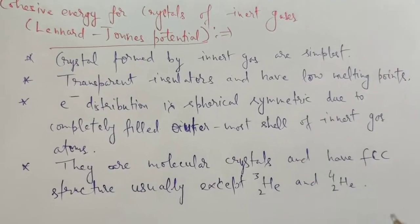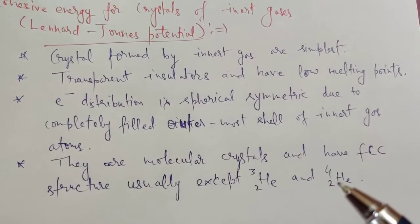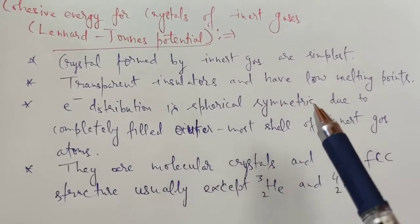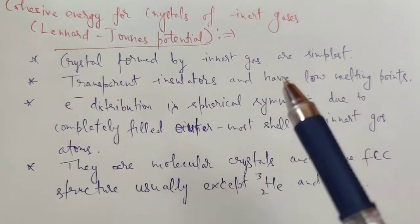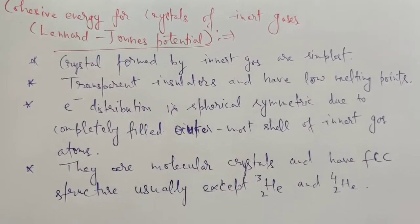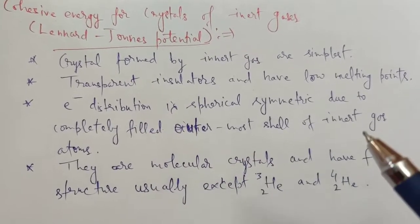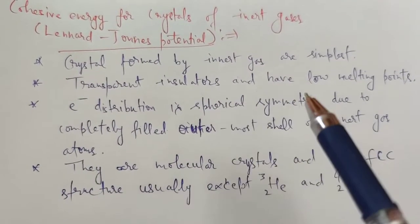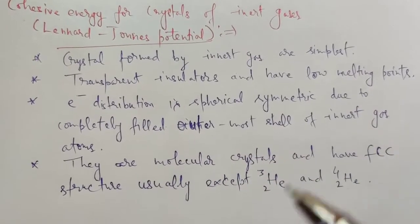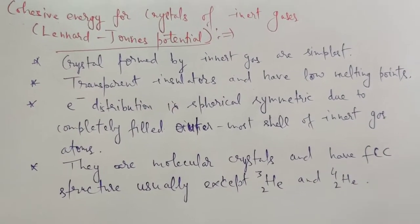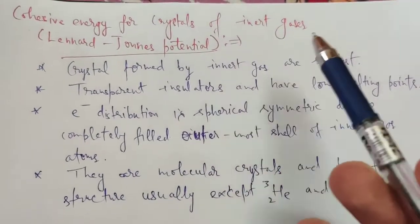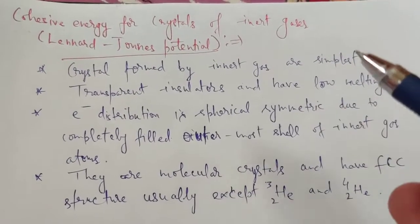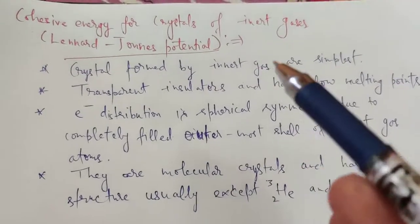Because inert gas atoms behave like free atoms — since there is no distortion of electronic distribution due to the completely filled outermost shell — there must be some other reason, some other factor, due to which there is cohesion in inert gas crystals.